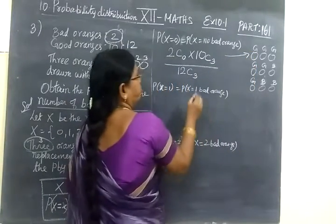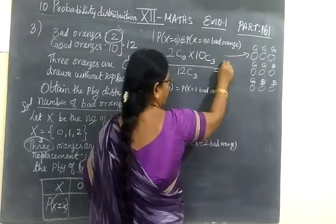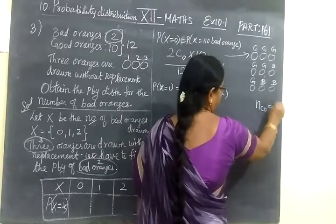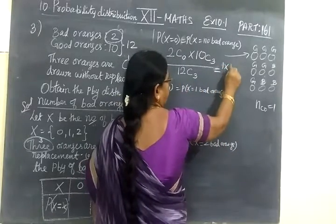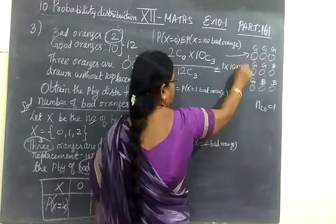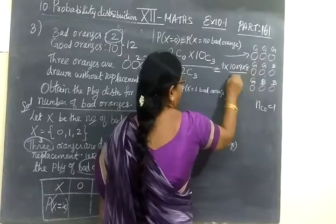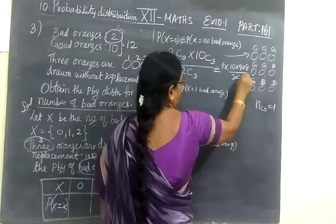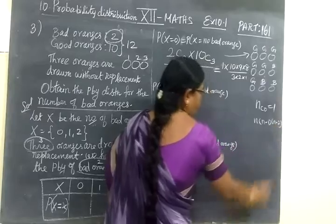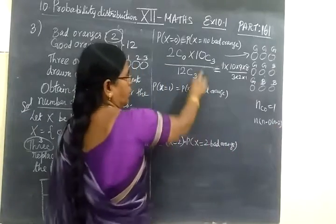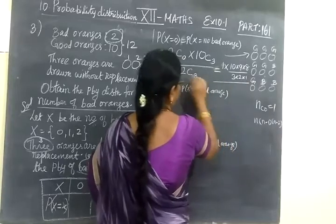Now this can be calculated as 2 C 0 is nothing but 1. N C 0 equal to 1. So 1 into 10 C 3, 10 into 9 into 8 by 3 into 2 into 1. Because from n into n minus 1, n minus 2, etc., this is 3 filled up to 3 numbers you stop it. Then total in around 12.